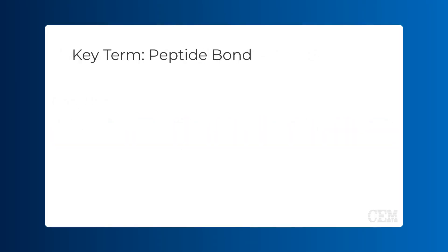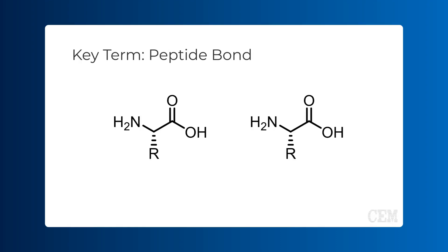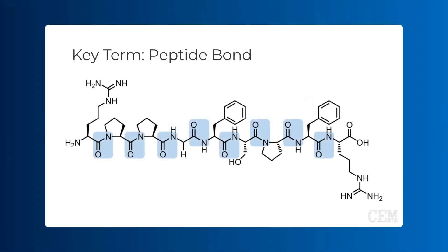A peptide bond is a covalent bond that forms through a condensation reaction between the carboxyl group of one amino acid and the amino group of another. The resulting amide bond links amino acids together in a chain, forming the backbone of peptides and proteins. Notice the highlighted peptide bonds here in bradykinin.